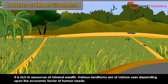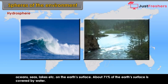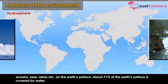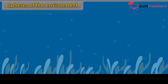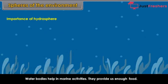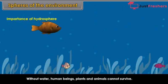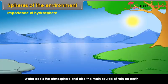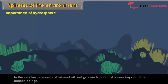Hydrosphere: It is the water sphere consisting of all water bodies — oceans, seas, lakes, etc. — on the earth's surface. About 71% of the earth's surface is covered by water. Importance: Water bodies help in marine activities and provide food. Without water, human beings, plants and animals cannot survive. Water cools the atmosphere and is the main source of rain. In the seabed, deposits of mineral oil and gas are found.